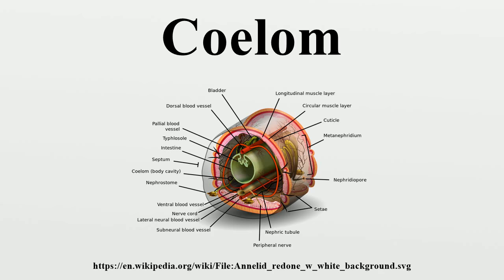Coeloms developed in triploblasts but were subsequently lost in several lineages. The lack of a coelom is correlated with a reduction in body size. There are also subtypes of coelom: schizocoelom, which develops from split-in mesoderm found in annelids, arthropods, and molluscs; hemocoelom, a true coelom reduced in cavity filled with blood found in arthropoda and mollusca; and enterocoelom, which develops from the wall of the embryonic gut found in echinodermata to chordata.